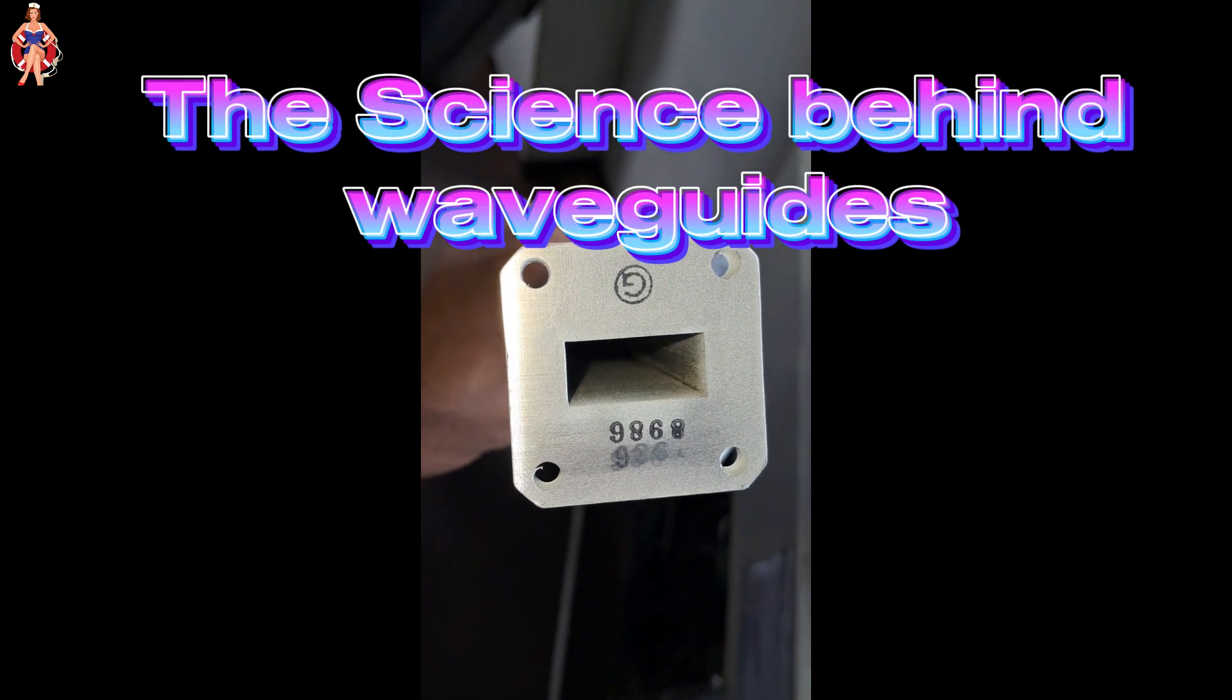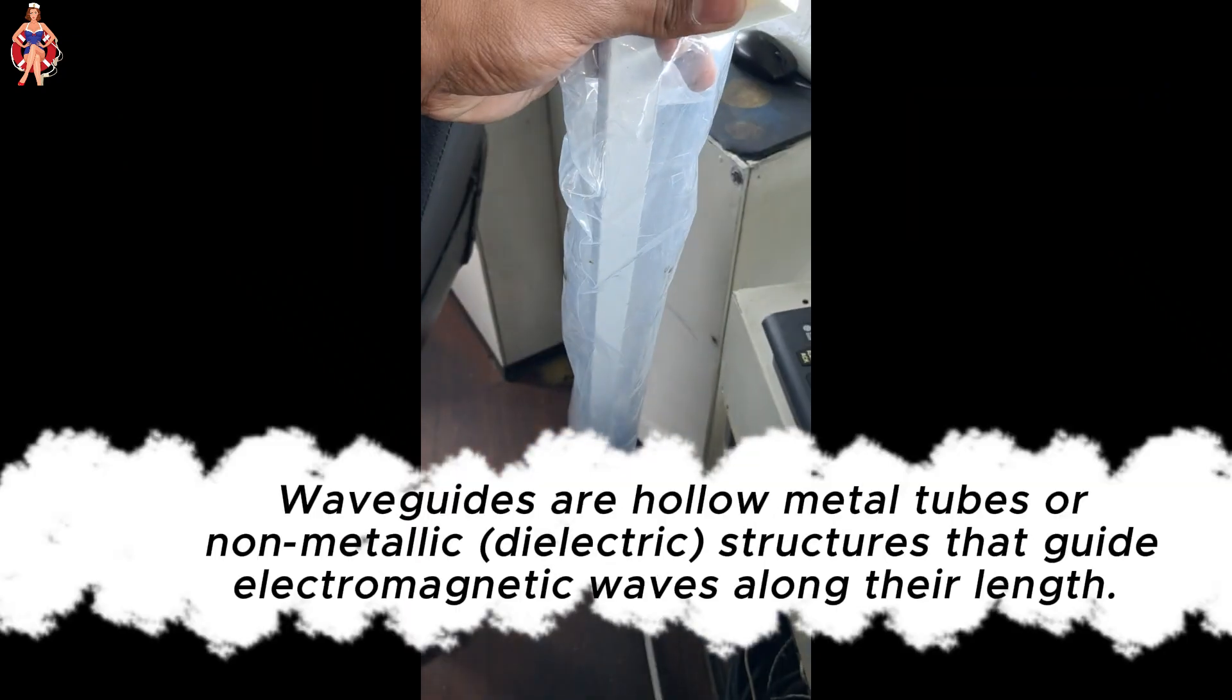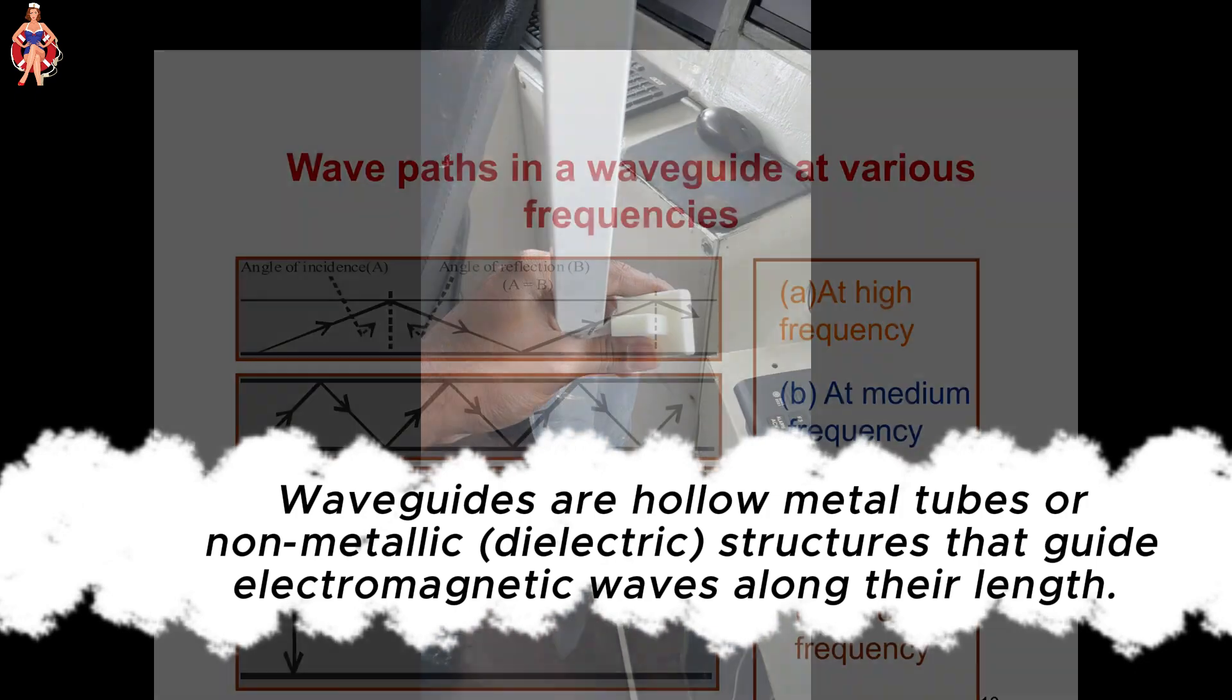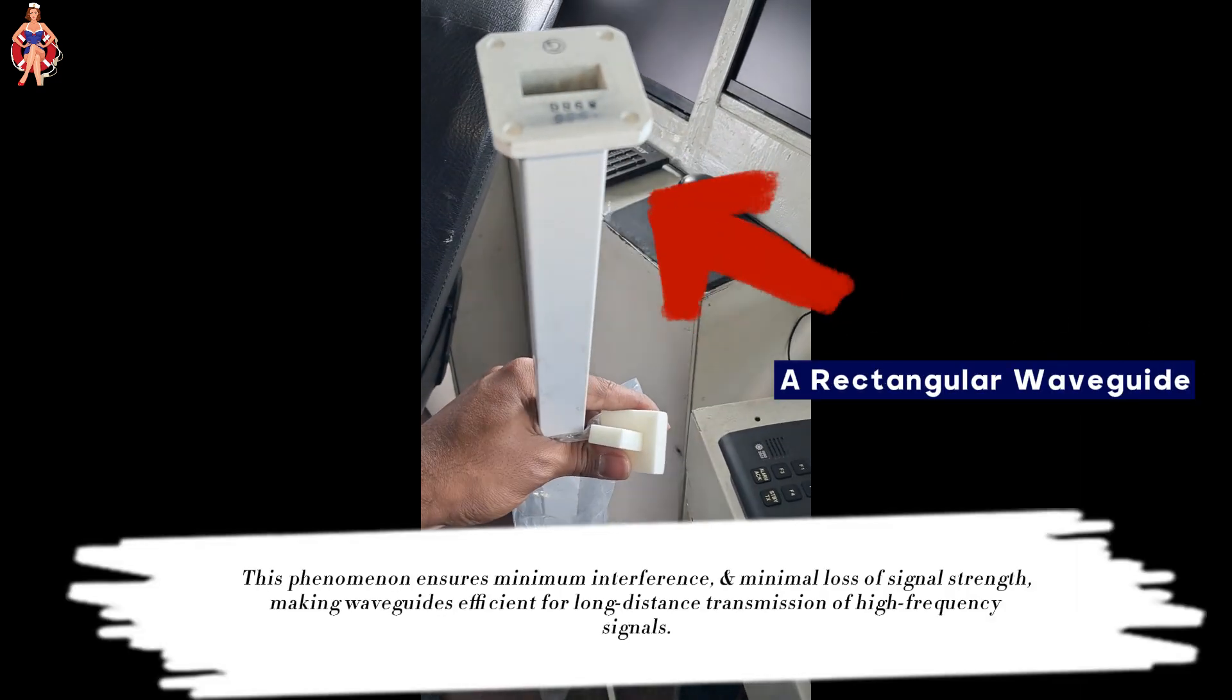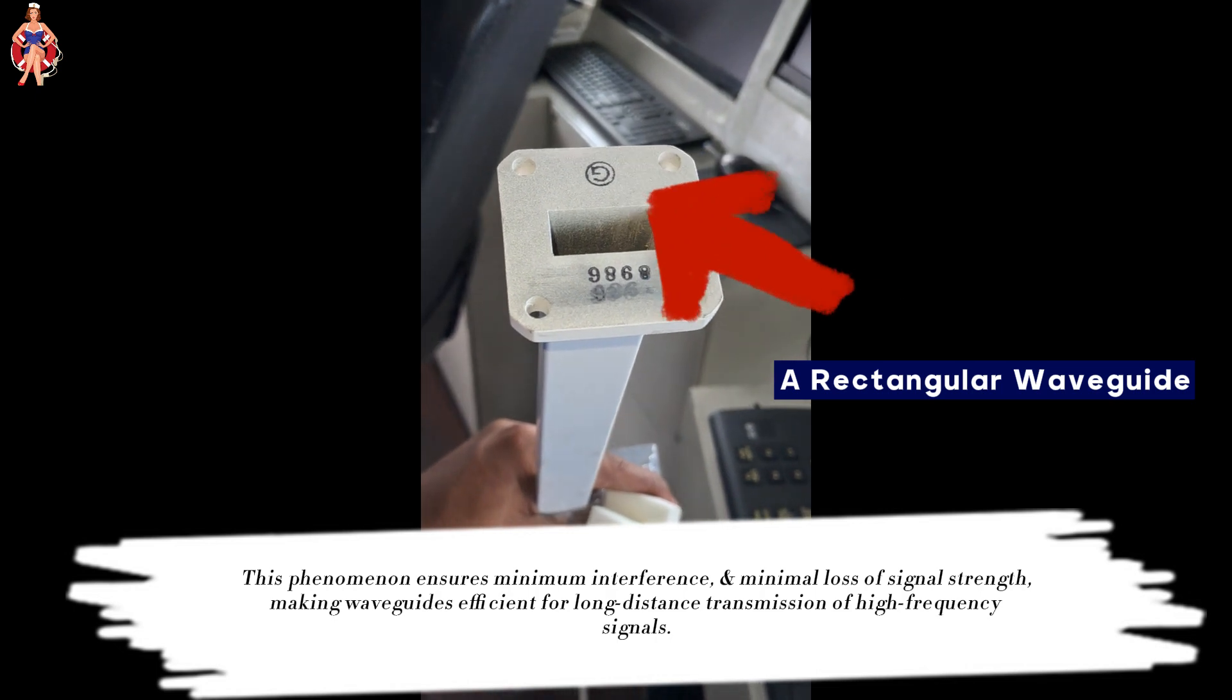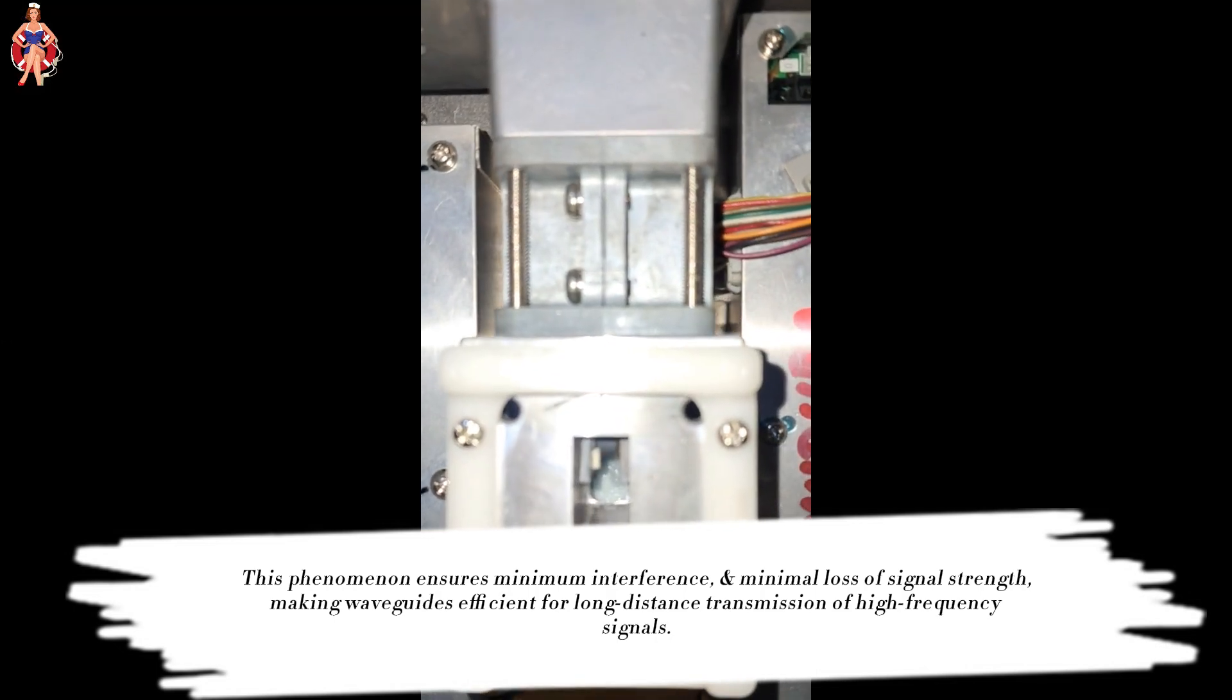The science behind the waveguide: Waveguides are hollow metal tubes or non-metallic structures that guide electromagnetic waves along their length. They operate based on the principle of total internal reflection, where waves reflect off the inner surfaces of the guide. This phenomenon ensures minimum interference and minimal loss of signal strength, making waveguides efficient for long-distance transmission of high-frequency signals.